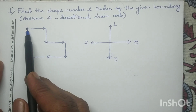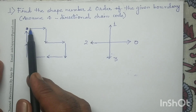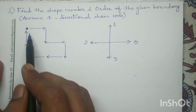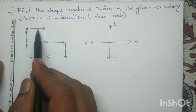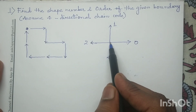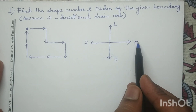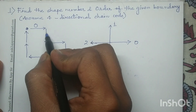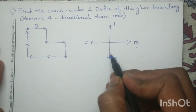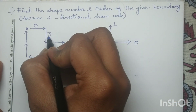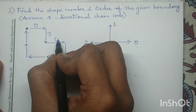In this question, this dot represents the origin and we start from the starting point, moving according to the directions given. The forward direction is assigned code 0, so I will write 0. The downward direction is assigned code 3, so I will write 3.